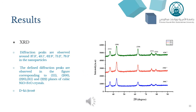The result obtained from XRD is that the crystalline structure of nanoparticles has been improved due to the addition of iron, with samples at different temperatures showing a face-centered cubic structure. This observation is consistent with previous studies.